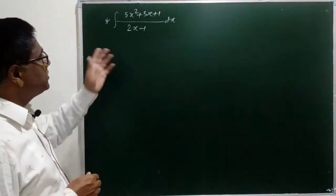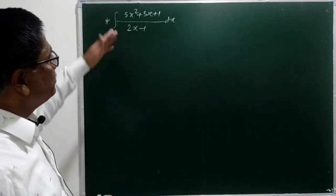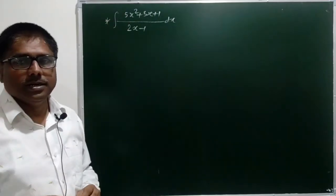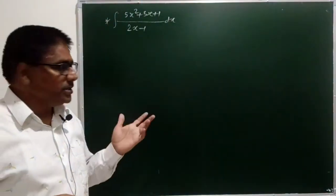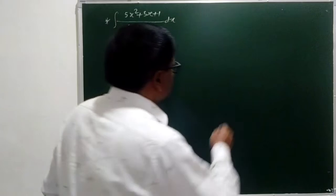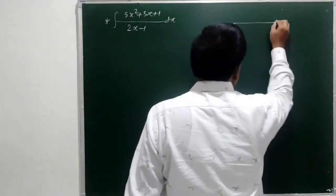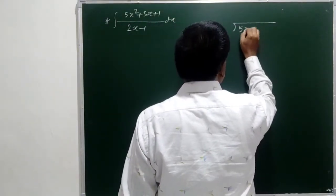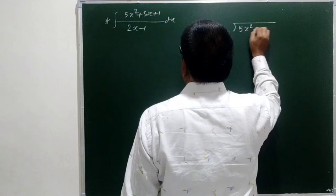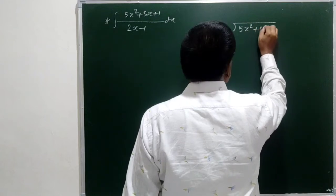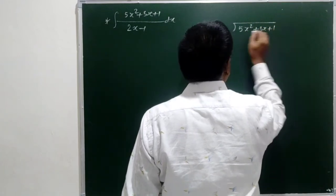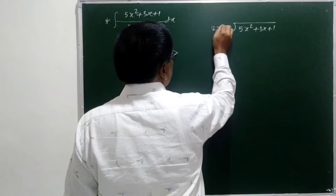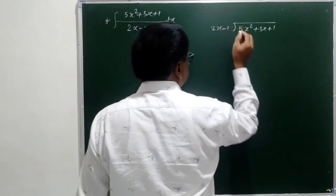To solve this problem, let us do the actual division of this polynomial or rational function. For that, let us write this division as 5x squared plus 3x plus 1 upon 2x minus 1.